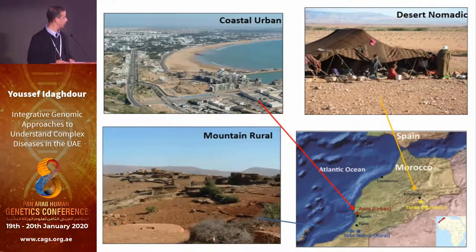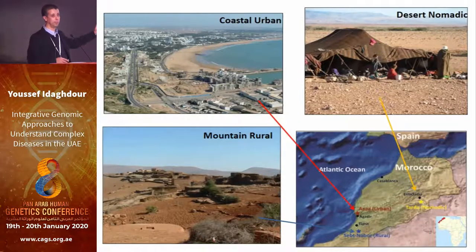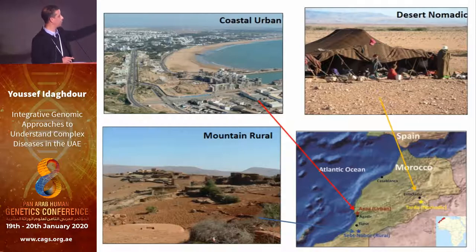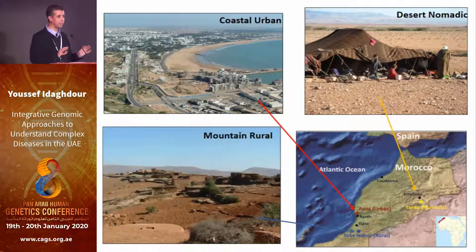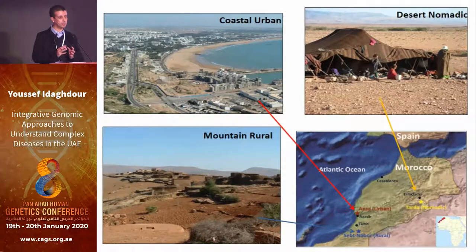Most importantly, in Morocco we have a lot of variation when it comes to lifestyle. There are three main lifestyles: the typical urban lifestyle, the rural sedentary lifestyle which is very traditional, and the nomadic lifestyle, which is also very interesting. Those are very, very distinct lifestyles, and we have different populations with different genetic backgrounds living in those environments. It's a very interesting setup to study gene-environment interactions in one study.